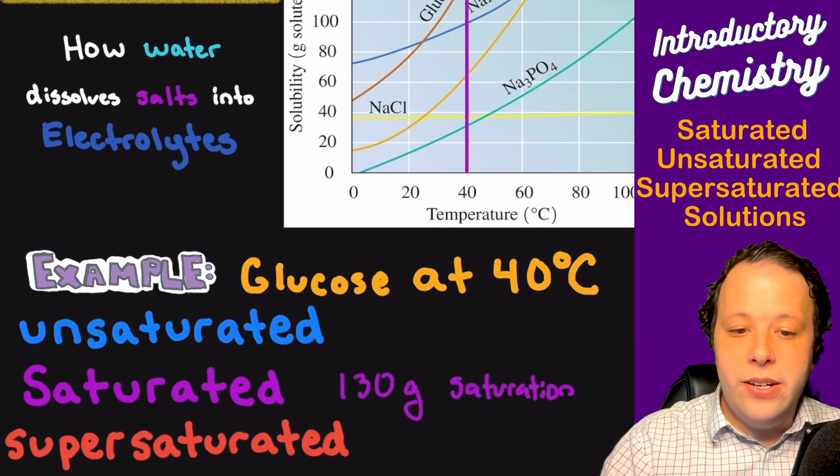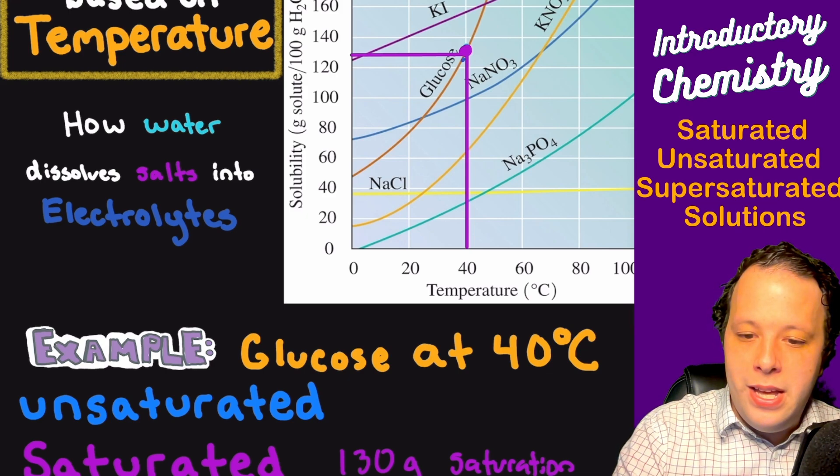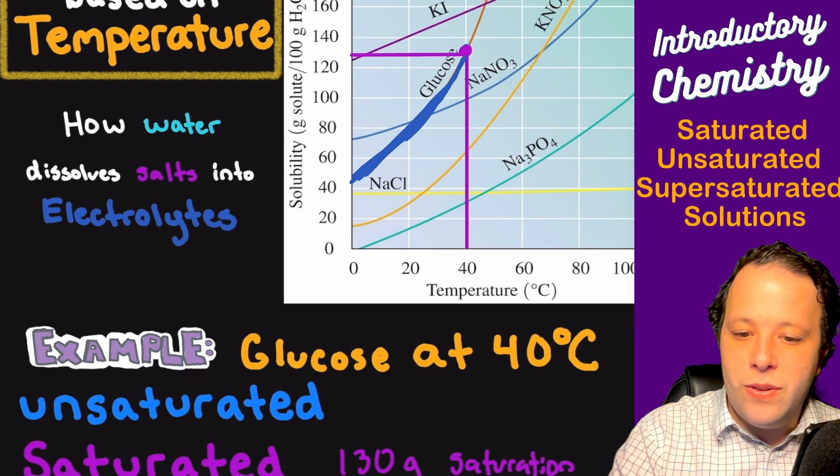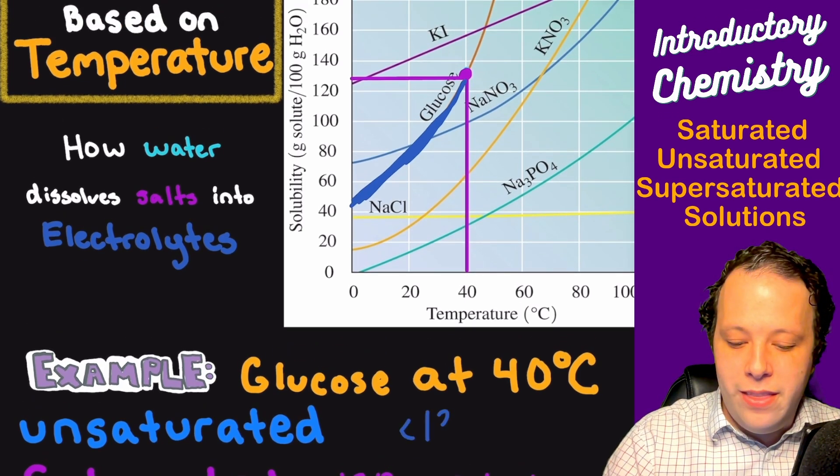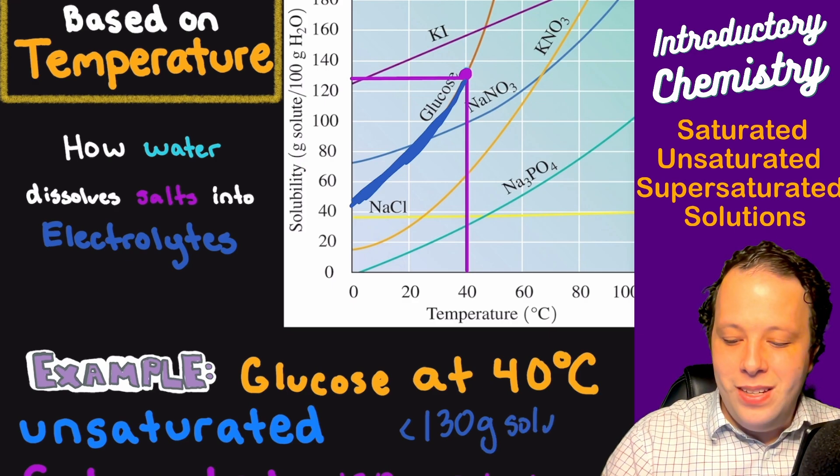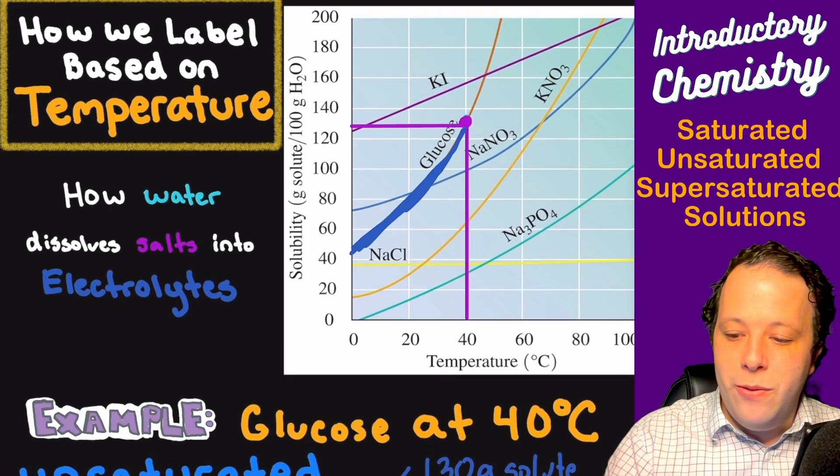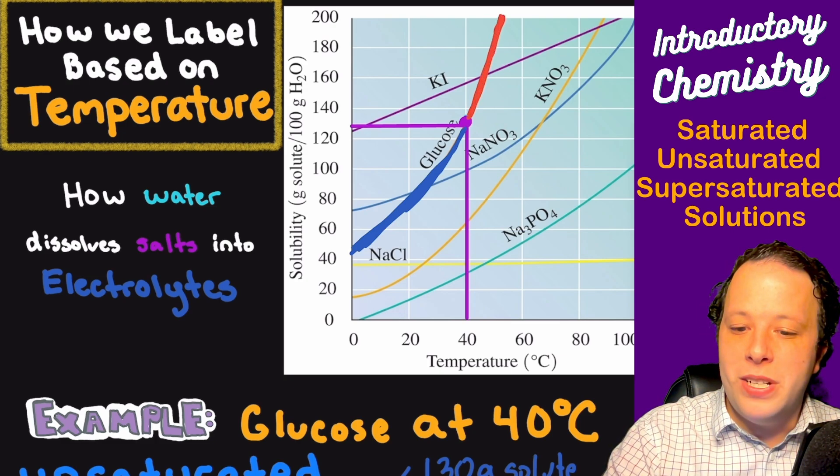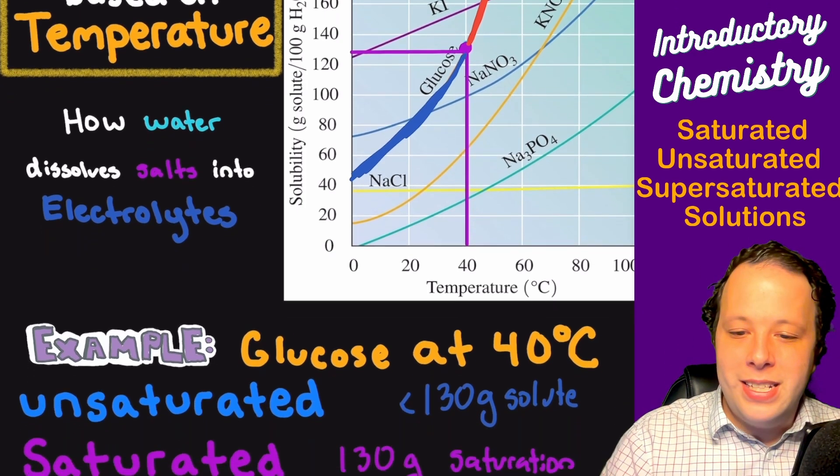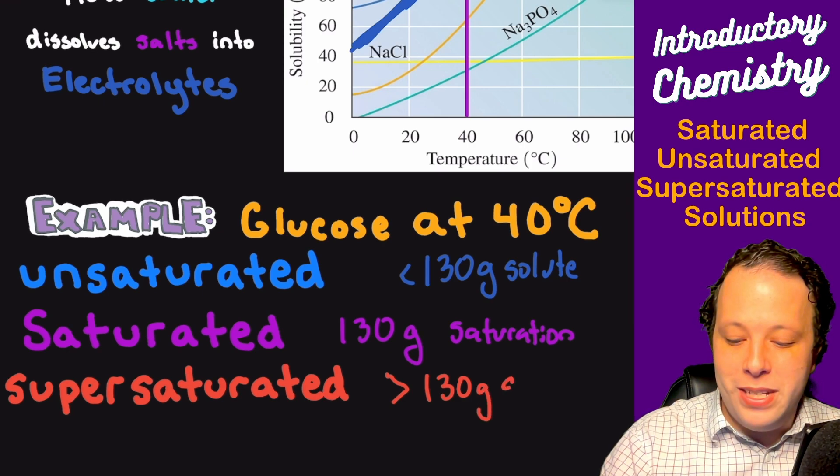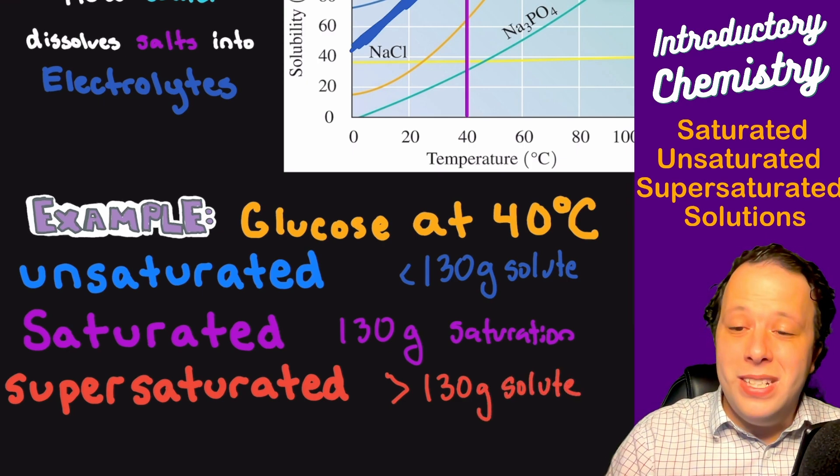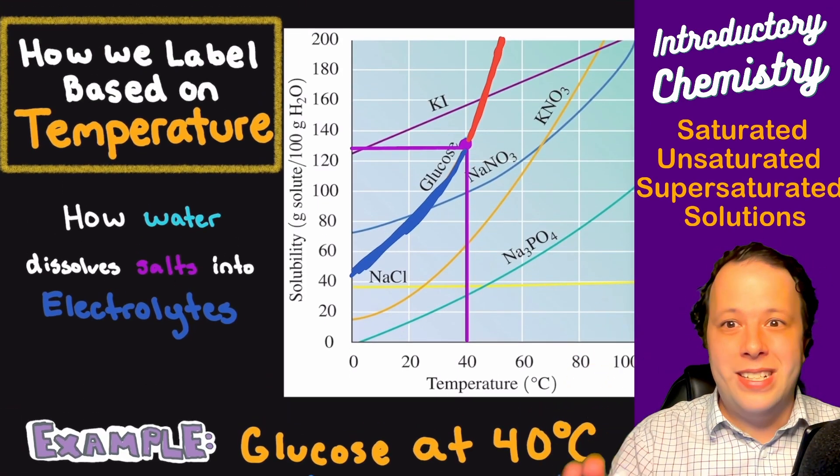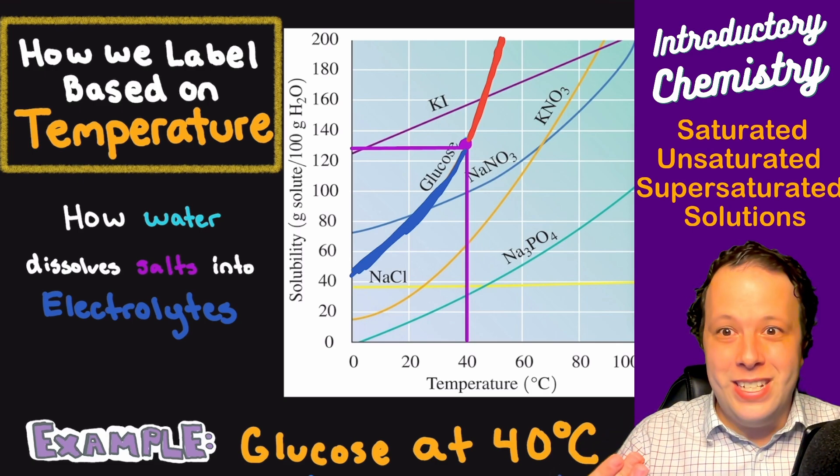Now what would be considered unsaturated? If we were to label that in blue, everything below here would be considered the unsaturated limit. So everything that's lower than 130 grams of solute. Now when would it be supersaturated? That would be when you have anything above this purple point will be considered to be supersaturated. Anything greater than 130 grams of your glucose solute. It's all about trying to pinpoint exactly where you're at on the graph.